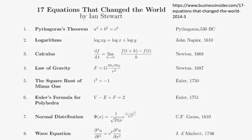Let me share the 17 equations that changed the world according to Ian Stewart. First is the Pythagorean theorem, the logarithms by John Napier, the equation in calculus — the limit and differentiation rules by Newton, the law of gravity by Isaac Newton as well, and the square root of minus 1 by Euler.